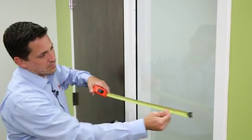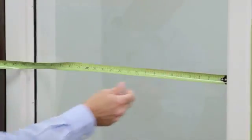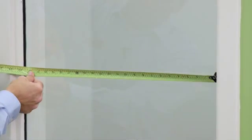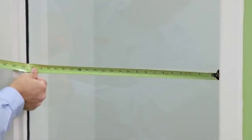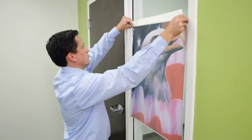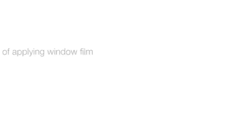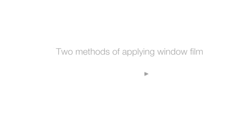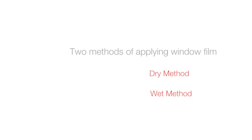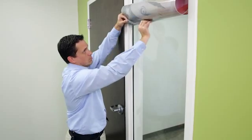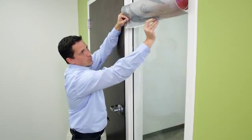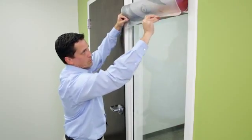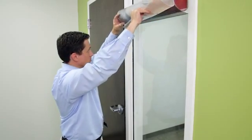The average application time varies by window, depending on the size and how many windows you're applying on. There are also two different methods of applying window film: one is a dry method and the other is a wet method. Make sure to check the specifications for that product to see which is recommended.